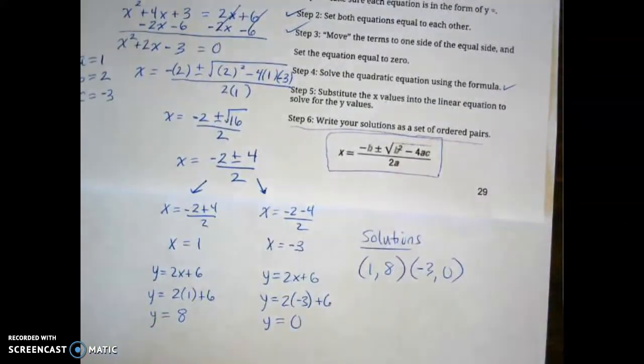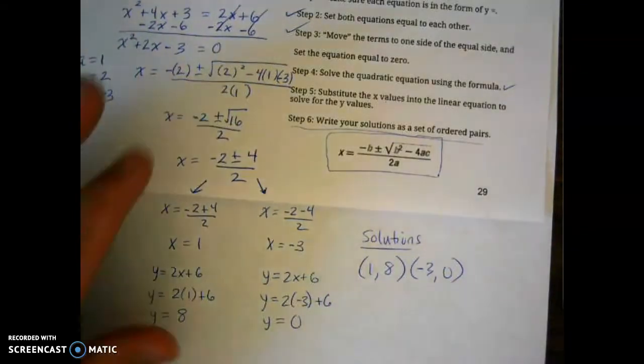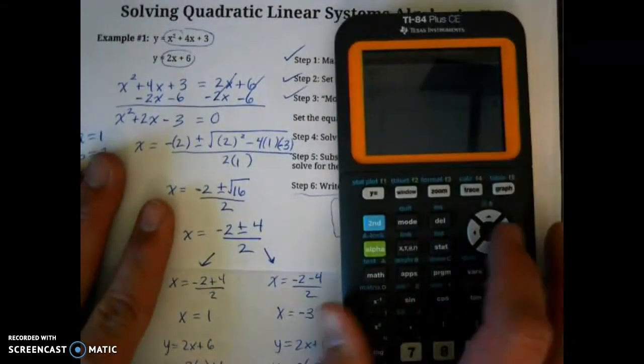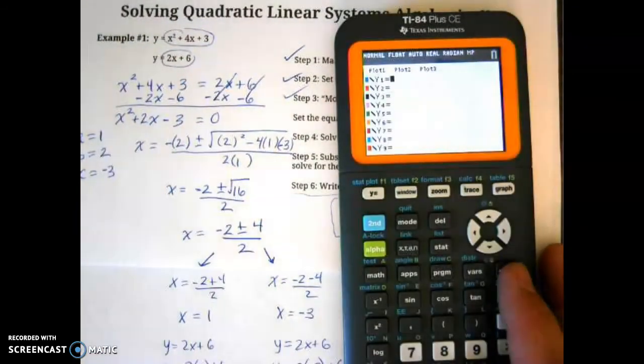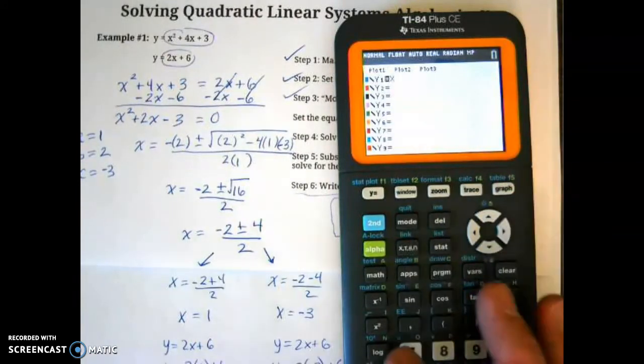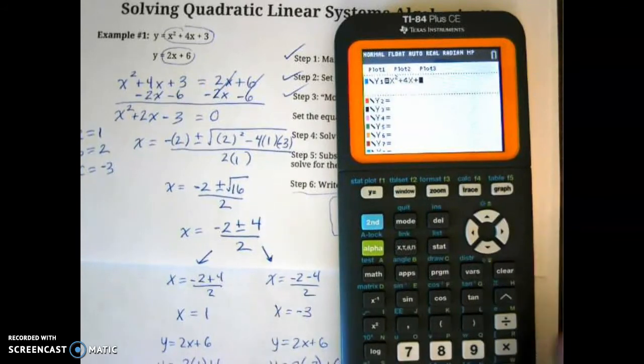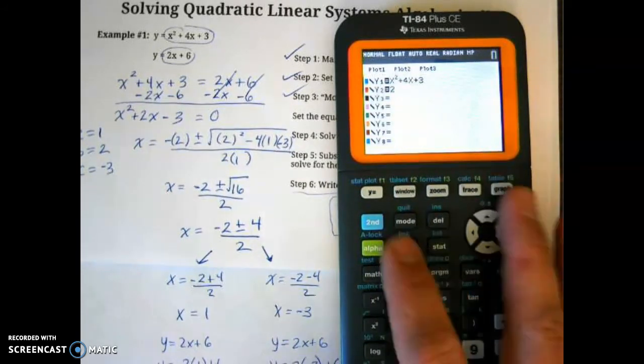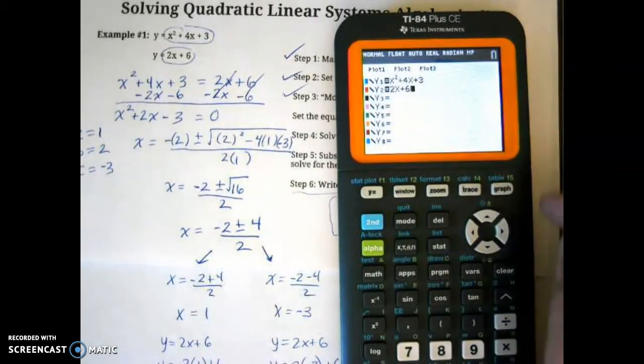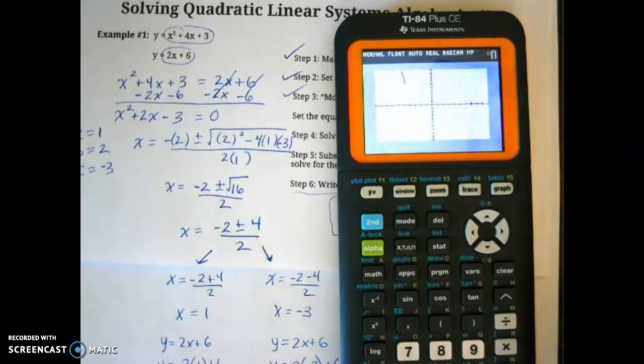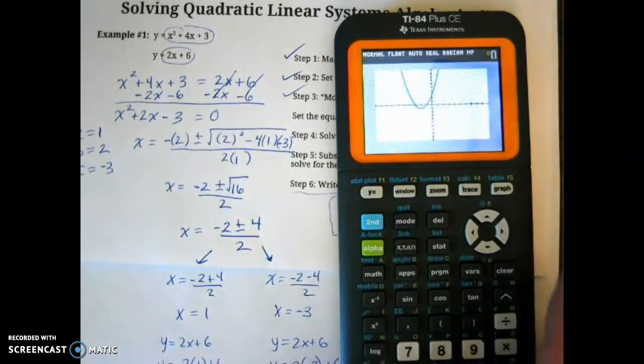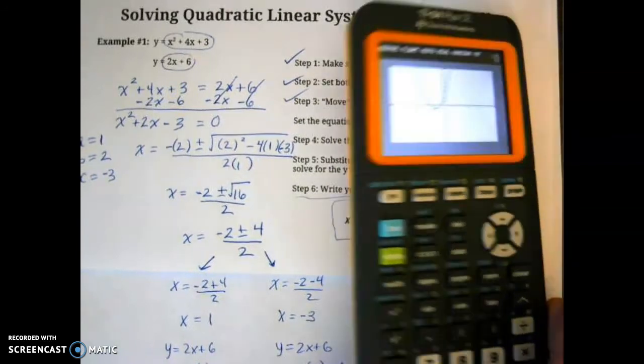Those are my two solutions. Now, if you just want to check your work, you could always go back to the original equation. Go into y equals, and check them graphically. So I could do x to the second power, plus 4x plus 3, and 2x, y equals 2x plus 6. Now, some of you look at the graph. If you look at the graph, they should intersect at, we said, 1, 8, and negative 3, 0.